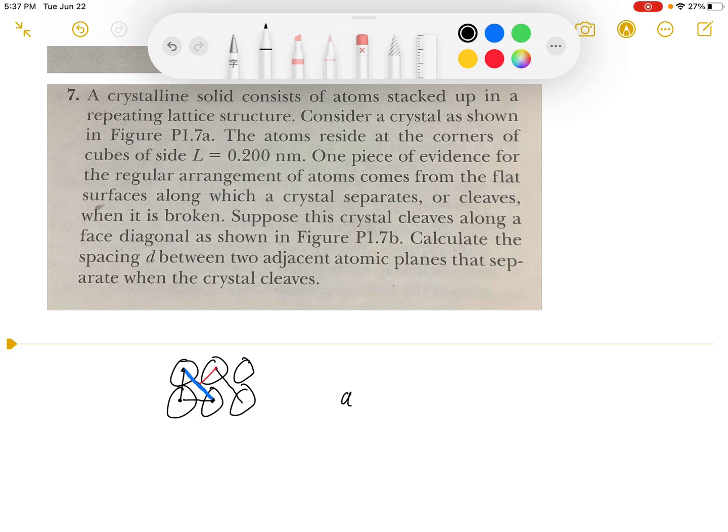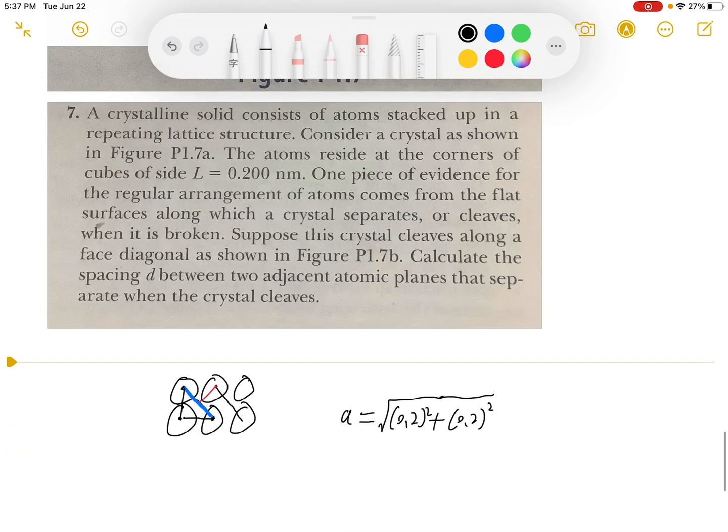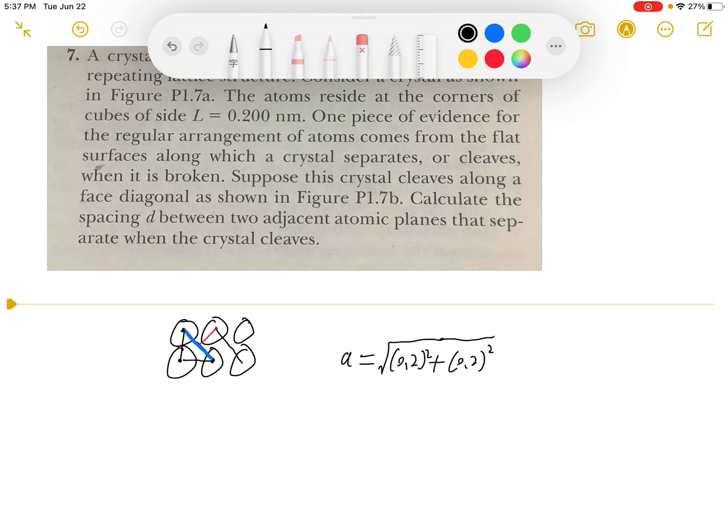Let's call a equals square root of 0.2 squared plus 0.2 squared. And distance D, which is the red line, will be half of it, so we just divide this by two. And after calculating this, we will get approximately 0.141 nanometers, and that's our answer.